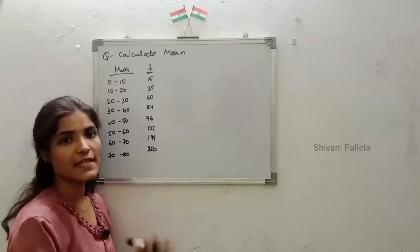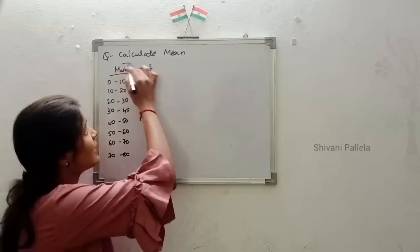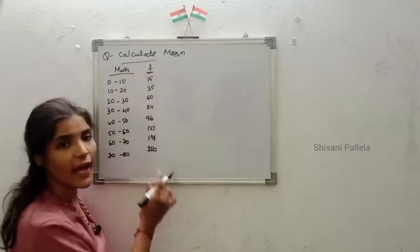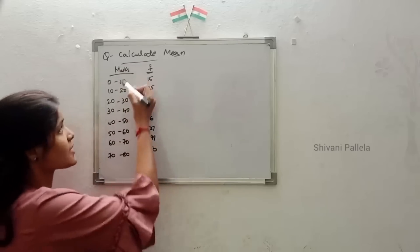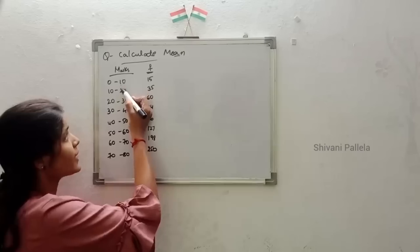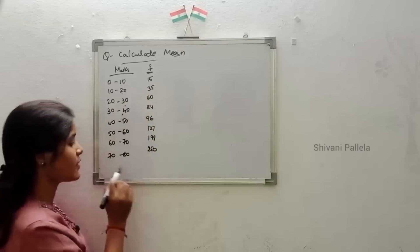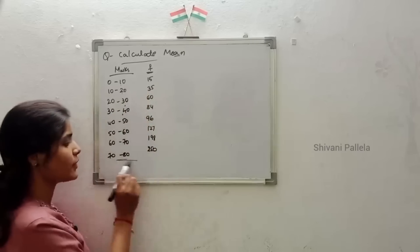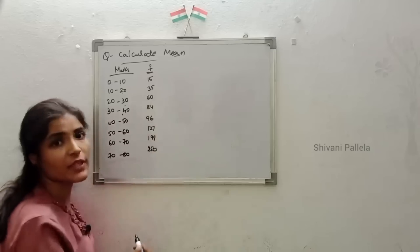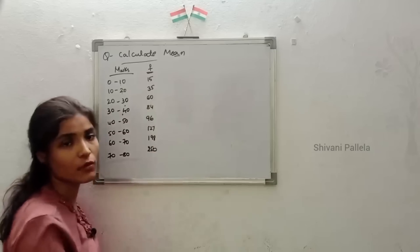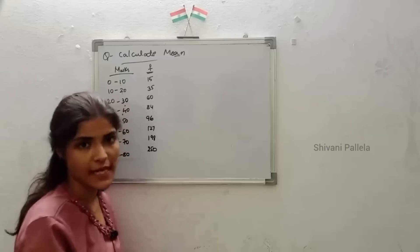In the previous year question paper, they asked to calculate mean and gave marks data like: 0 to 10, 10 to 20, 20 to 30, 30 to 40, up to 70 to 80, along with frequency. Here is how we calculate. We first need to compute the frequency column.